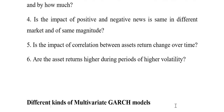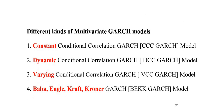Now let's see what the different kinds of multivariate GARCH models are. The first type is the Constant Conditional Correlation GARCH model, commonly known as CCC-GARCH. The second is the Dynamic Conditional Correlation GARCH model, also known as DCC-GARCH. The third is the Varying Conditional Correlation GARCH model, also known as VCC-GARCH. The fourth is the Baba-Engle-Kraft-Kroner GARCH model, also known as BEKK-GARCH. We are going to study these models and create them using R Studio.